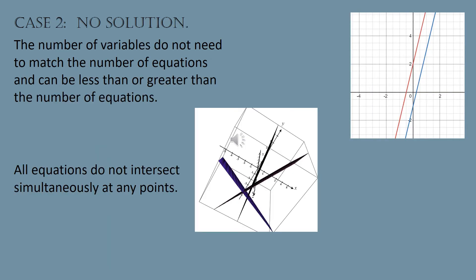If you have no solution, you can have any number of equations and variables — there's no stipulation of having the same number. But all of the equations do not intersect in any common point. In a two-by-two case, you have two parallel lines that do not intersect. In a three-by-three case, you have three planes that do not all intersect in the same place — two planes can intersect, but all three do not share a common point. This idea extends to higher dimensions as well.